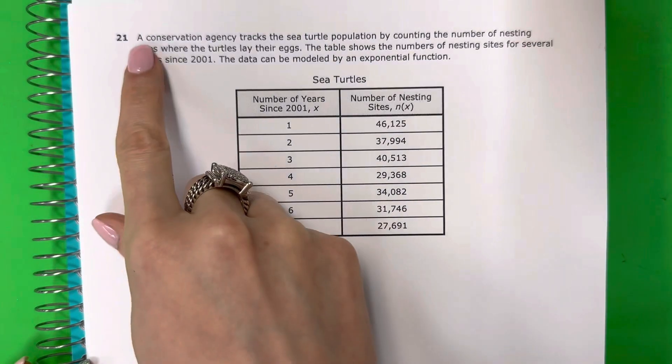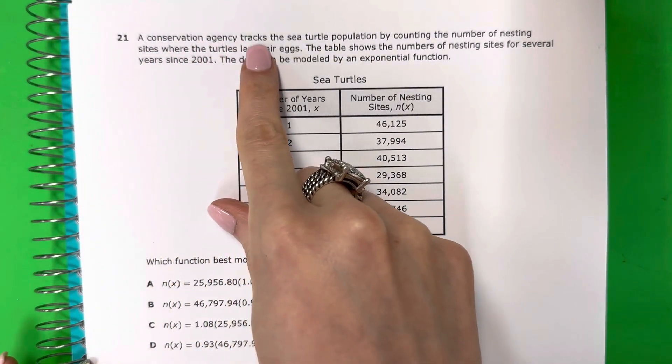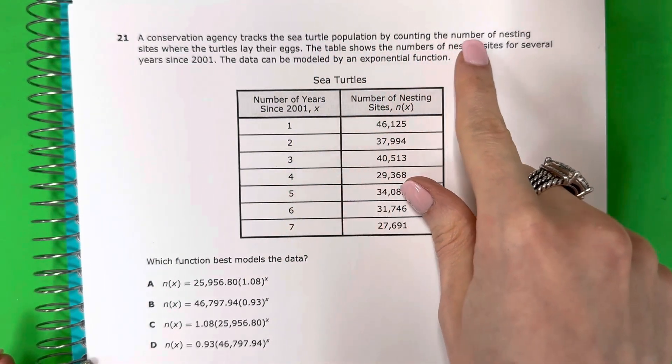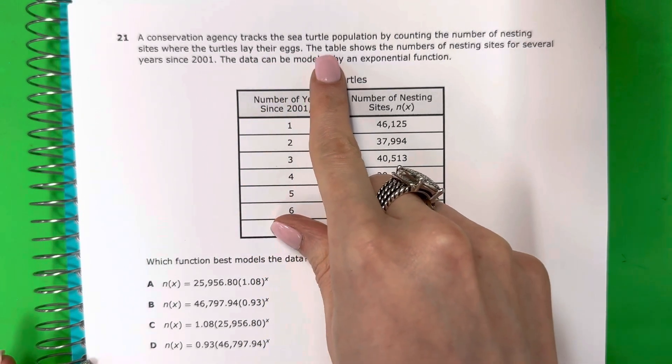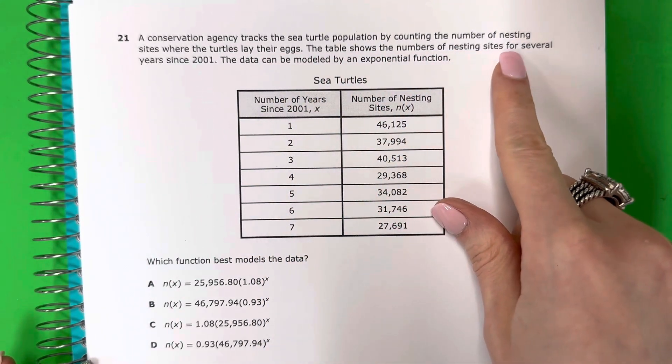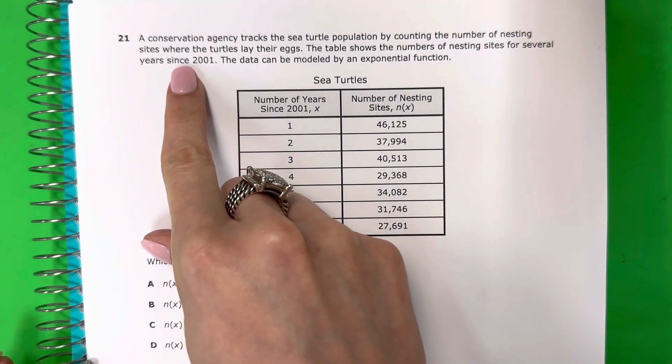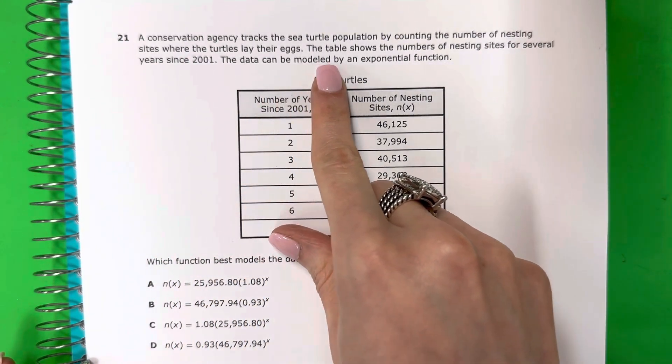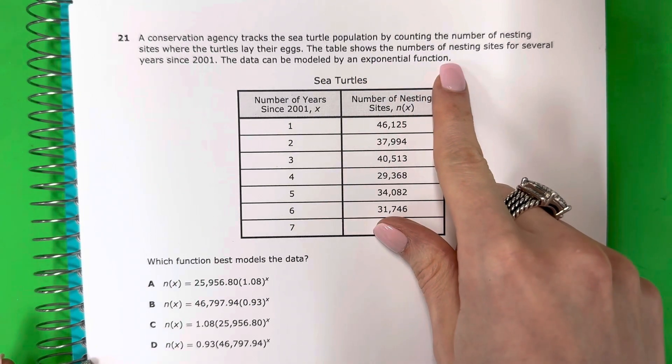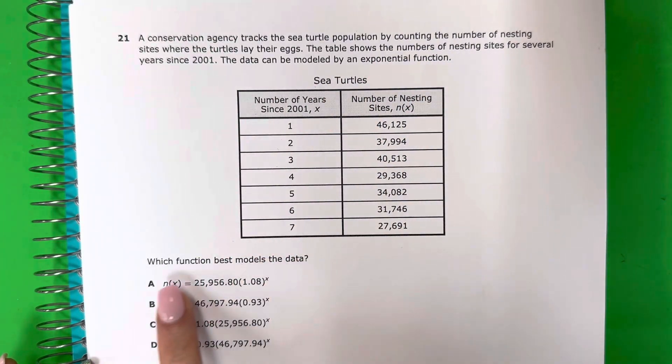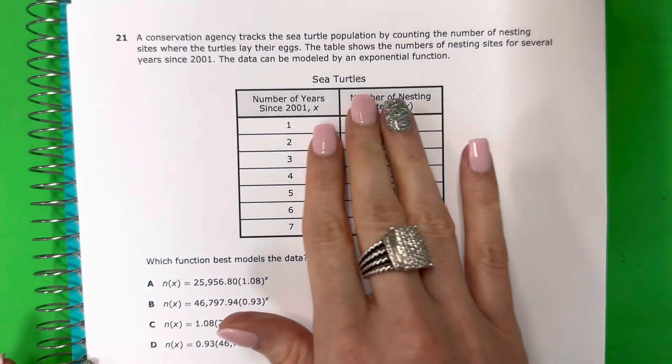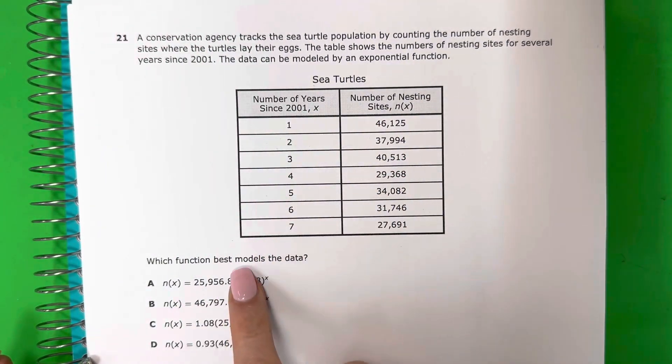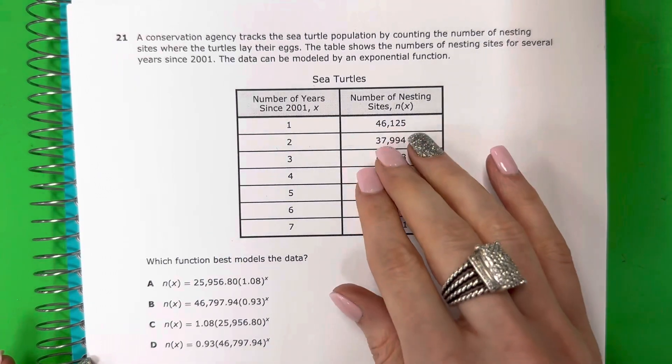Question 21. A conservation agency tracks the sea turtle population by counting the number of nesting sites where the turtles lay their eggs. The table shows the number of nesting sites for several years since 2001. The data can be modeled by an exponential function. So I have a table. Which function best models the data? I need to know which of these equations is for this table.